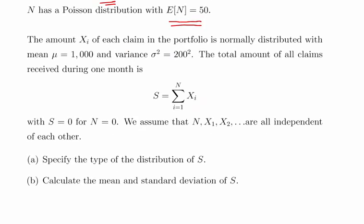The amount of each claim in the portfolio is normally distributed with mean μ equals 1,000 and variance σ² equals 200².